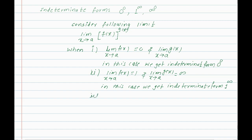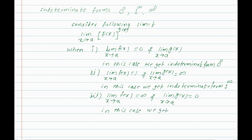Third case: if the limit of f(x) as x tends to a is infinity, and the limit of g(x) as x tends to a is 0, then we get the indeterminate form infinity to the power 0.